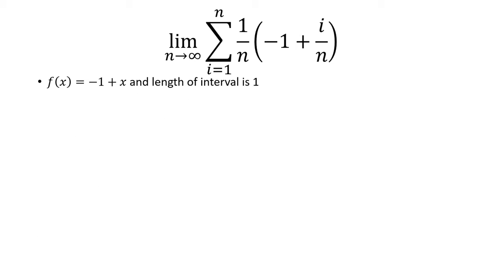So we know that f(x) is -1 + x and the length of the integral is 1. Now let's put it all together. We can rewrite by the definition of integral this sum as integral from 0 to 1 of -1 + x dx.